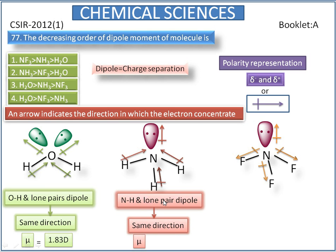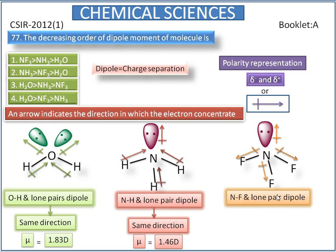The dipole moment of ammonia is equal to 1.46 D, but its value is lesser than water. In nitrogen trifluoride, the bond pair dipoles and the lone pair dipoles are opposite to each other. So the net dipole will be partially cancelled out, leaving a least value of dipole moment — equal to 0.24 D.